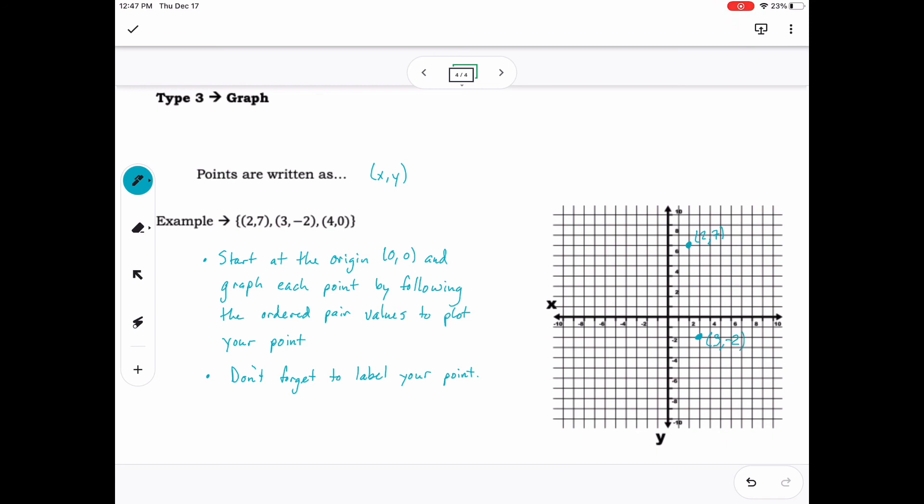For the point 4 comma 0, 4 is our x value. Start at the origin and go right 4 because 4 is positive. Our y value is 0, so we will not go up or down. Therefore, we are at our point's location. Plot and label your point.